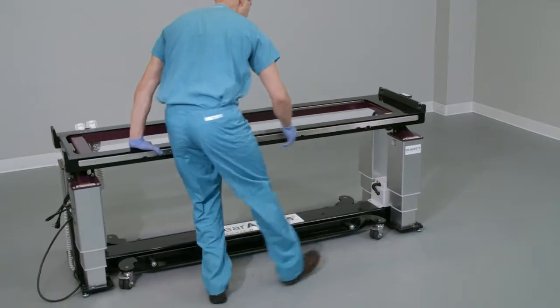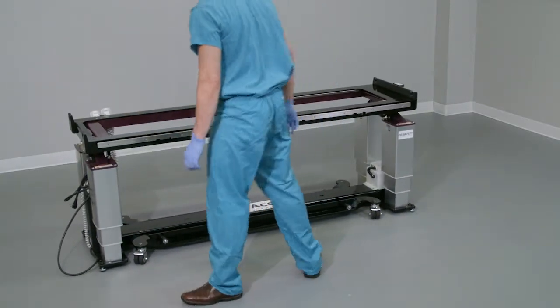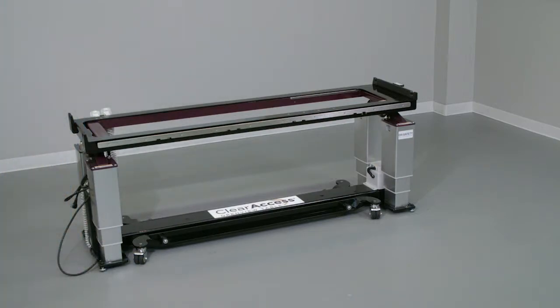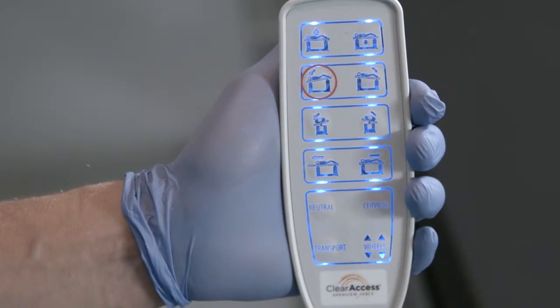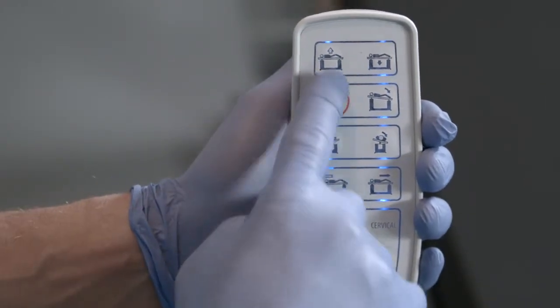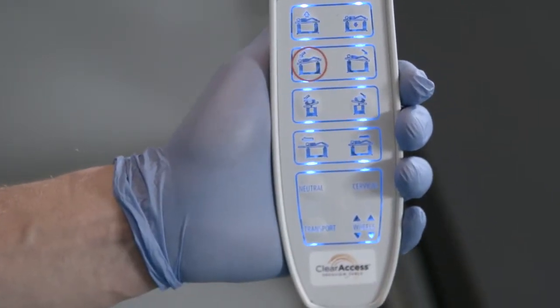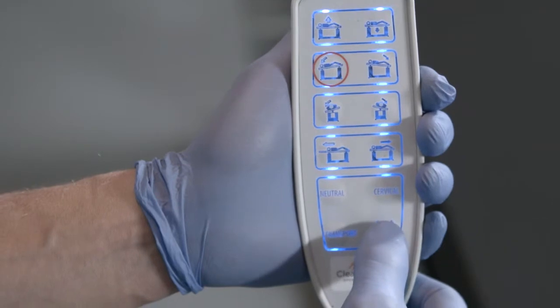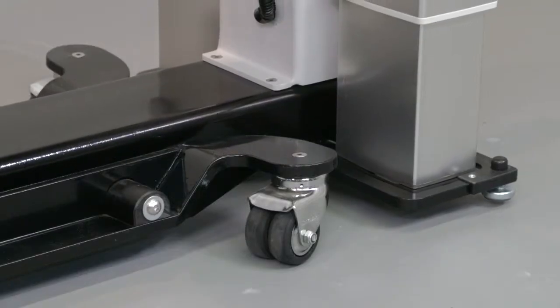Move the ClearAccess table to the preferred location in the OR. To lock the table to the floor, press any button on the hand controller to wake it. Both hand controllers will auto sleep if inactive for 30 seconds. Press any button to reactivate and then lock the table by pressing the wheels button firmly once and releasing. You'll note an audible beep as the table is lowered to the ground, warning caregivers to keep personnel and equipment clear of the table.